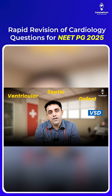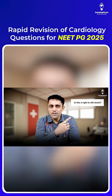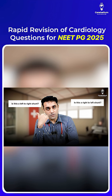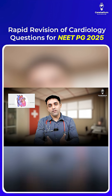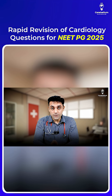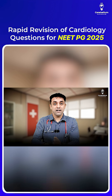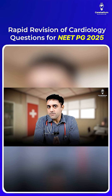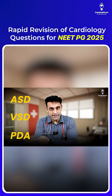Now VSD, ventricular septal defect — the first question is, is this a right-to-left shunt or a left-to-right shunt? Please remember, always remember, the left side of the heart has a higher pressure than the right side. That is why ASD, VSD, and PDA are all left-to-right shunts.